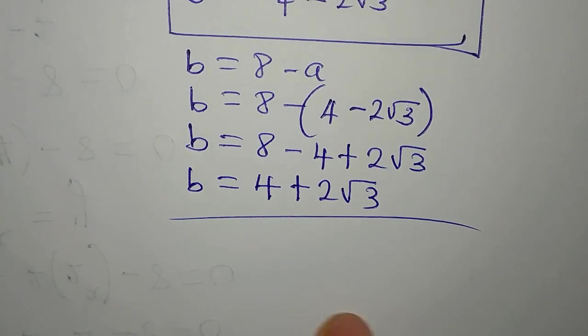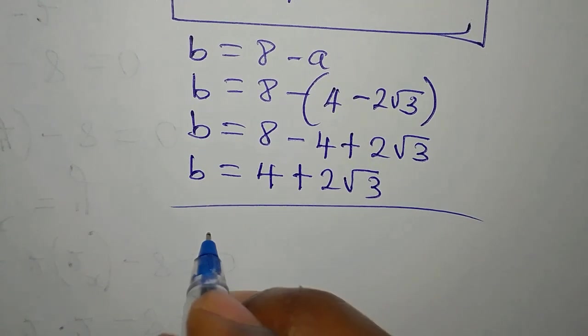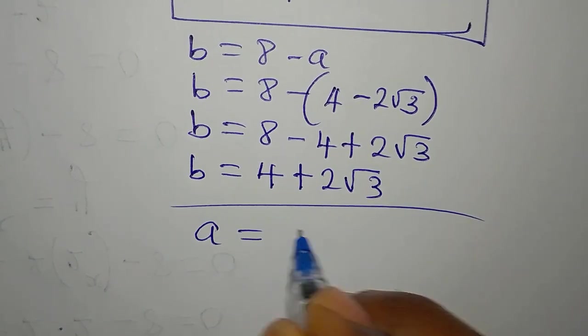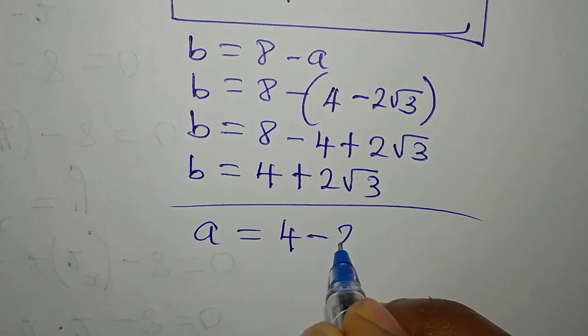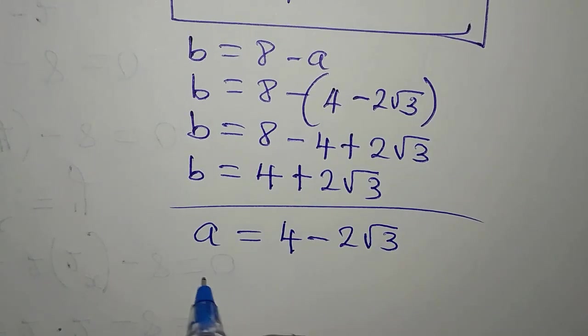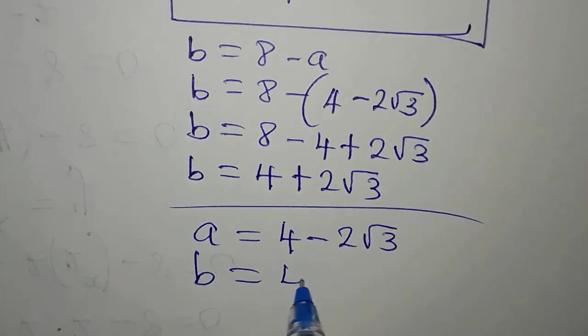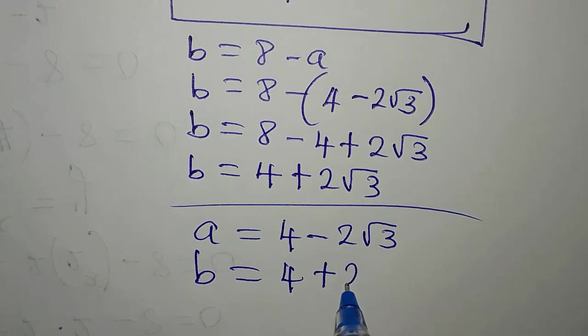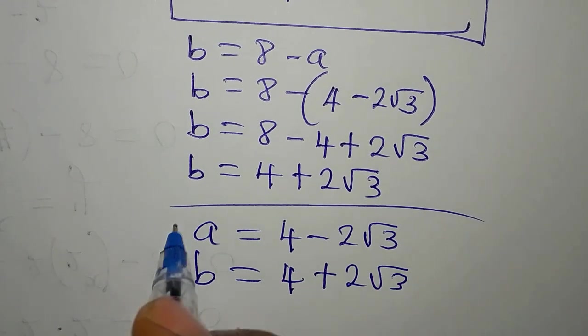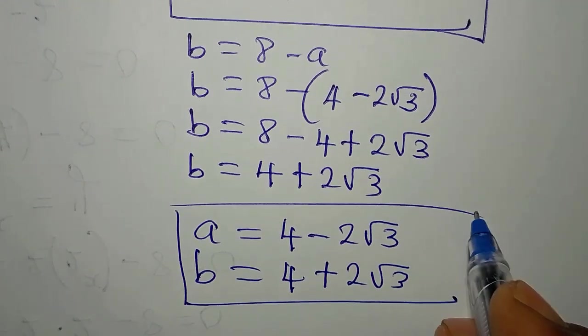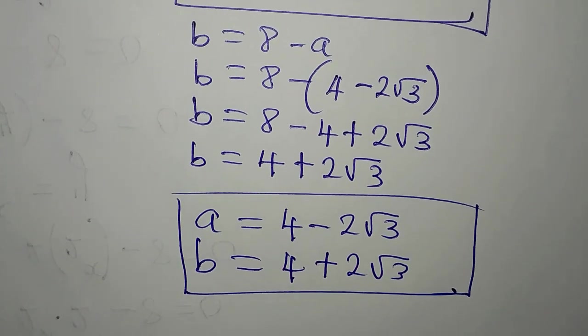So what are we saying? We are equally saying that when A is equal to 4 minus 2 root 3, our B is equal to 4 plus 2 root 3. So at this point, we have solved the equation completely.